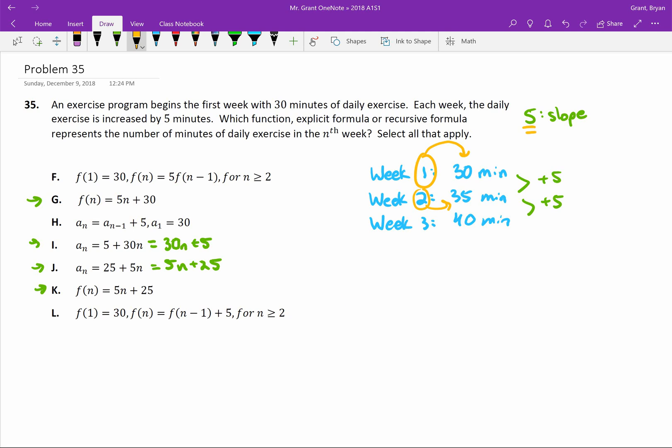We also know that our slope is 5. Let's use the slope first, and then go back to that plug-in. Right here, we see our slope is 5. That's good. Here, our slope is 30. That's out. For J, our slope is 5, and K, our slope is 5. Now it comes down to if we plug in 1, do we get an answer of 30?